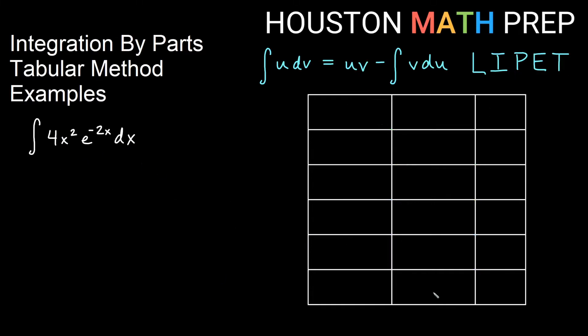Next one here, 4x² e to the negative 2x. Similar thing here, I have a polynomial. I have an exponential here, so since p comes before e, I would choose this to be my u. And remember, we can use tabular method when we choose u to be a polynomial.